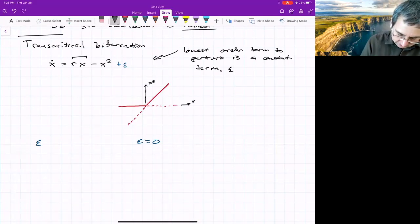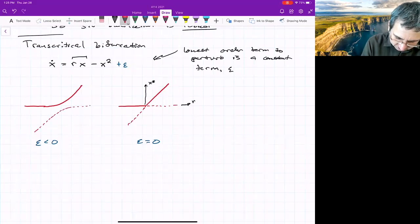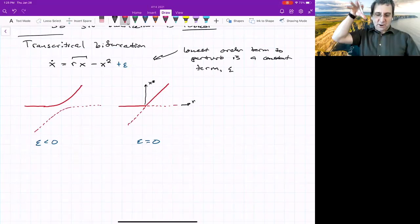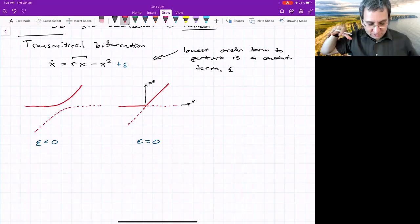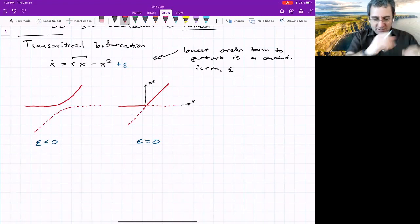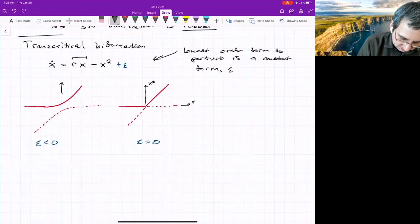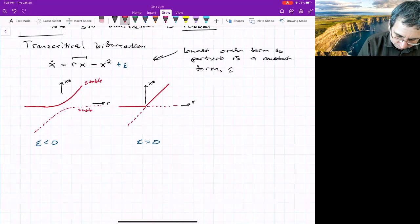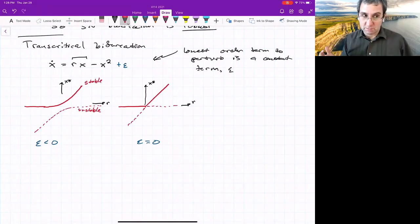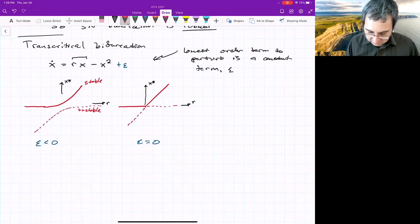X star versus r. What happens when epsilon is less than zero? What we get is that this stable branch just sort of misses. And the unstable branch just sort of misses. So if you were to be zooming out, it looks still like a transcritical, but the two points don't actually intersect. They don't exchange. You have that one stable point stays stable and moves. The other is unstable and moves. In some sense, there really isn't a bifurcation. Transcritical bifurcation does not seem to survive a constant term when a constant term is negative.